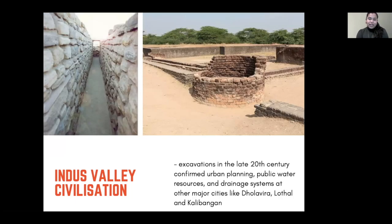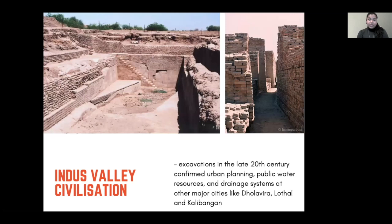Excavations in the late 20th century and more recent times have confirmed these massive cities with detailed urban planning, public water resources, centralized food storage, and drainage systems. We have seen these at other major cities such as Dholavira, Lothal, and Kalibangan, all three in modern-day India. These have revealed vast structures, planned streets in a grid-like system, drainage systems, public baths, and public toilets — planning at a completely massive scale.